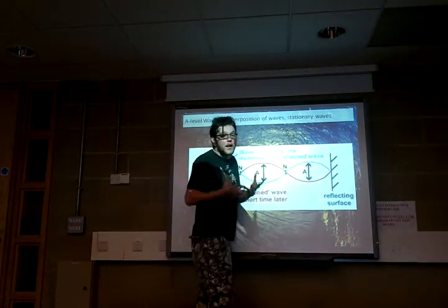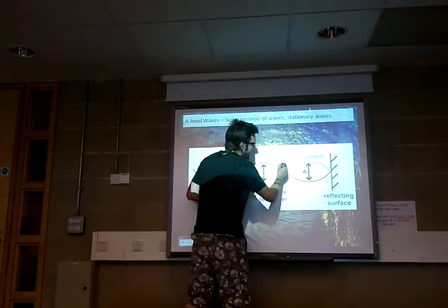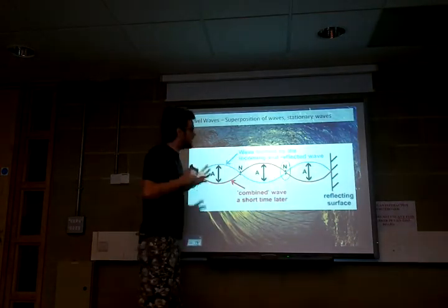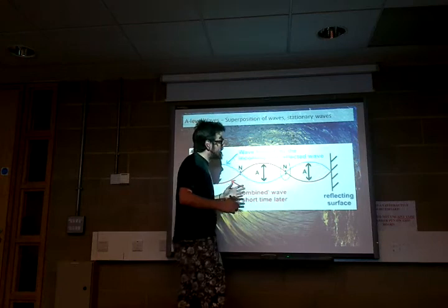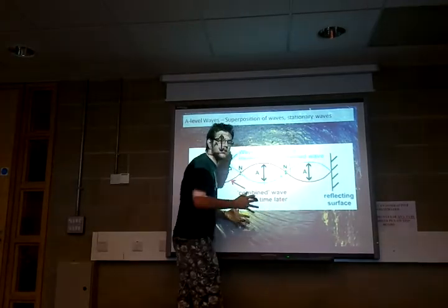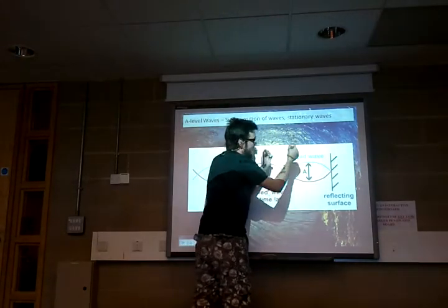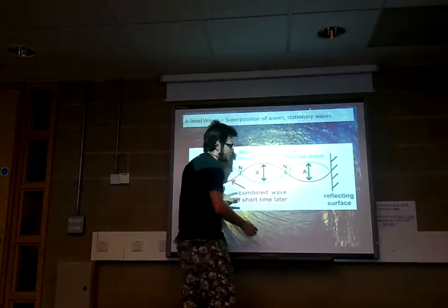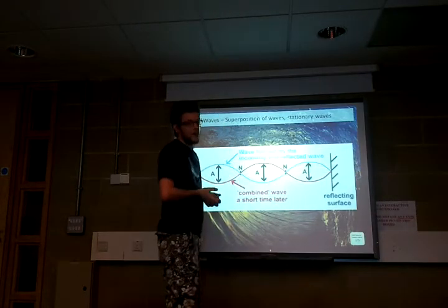A node is the opposite of an anti-node. A node is where it's destructive — where both waves are hitting that zero disturbance point and cancelling each other out, so nothing is happening. This is at a point of zero disturbance. A stationary wave therefore has nodes and anti-nodes: the node is the result of destructive interference, and an anti-node is the result of constructive interference.